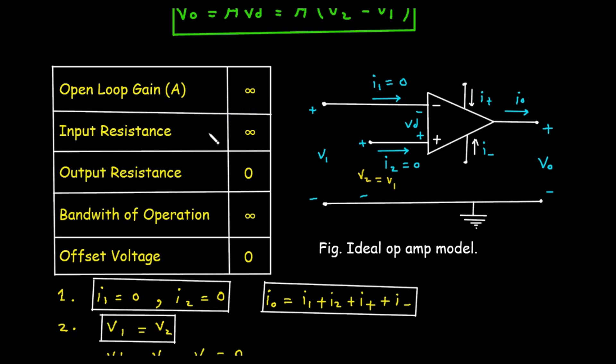Then, input resistance RI should be also infinite in case of ideal Op Amp. We assume the resistance at the input is infinite. This means an ideal Op Amp draws zero current into its input terminals. Next is output resistance. Ideally it should be zero. Practically it is very low but ideally it should be zero. We assume the output resistance is zero. This means an ideal Op Amp is a perfect voltage source that can supply any amount of current to a load without its output voltage changing.